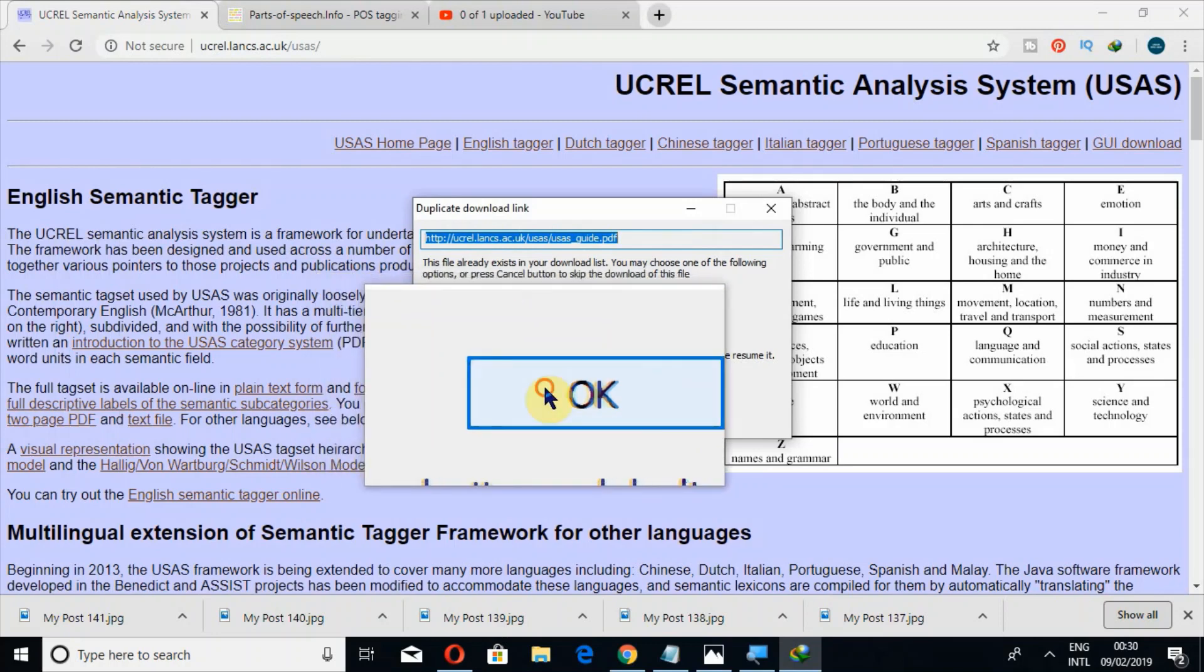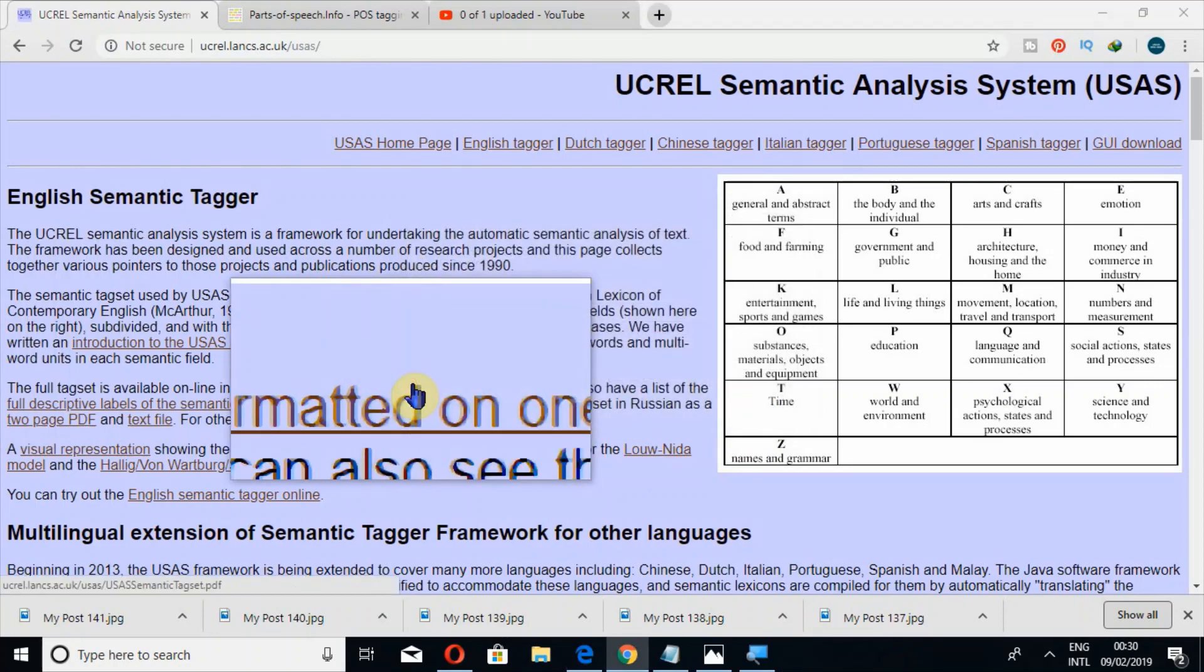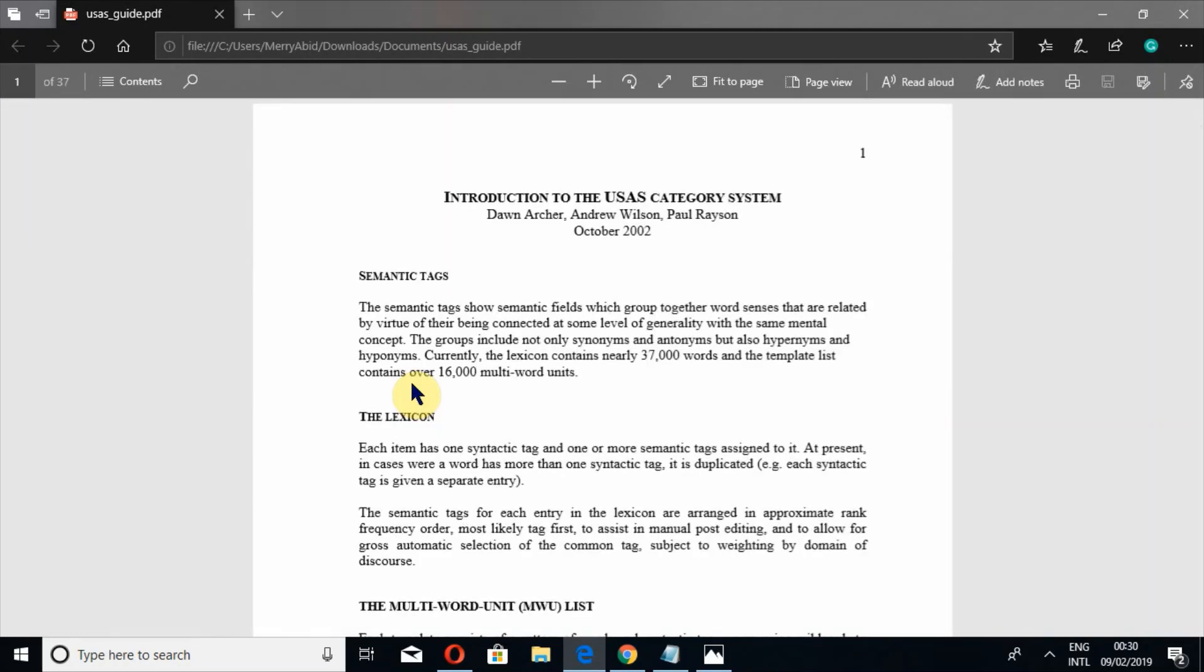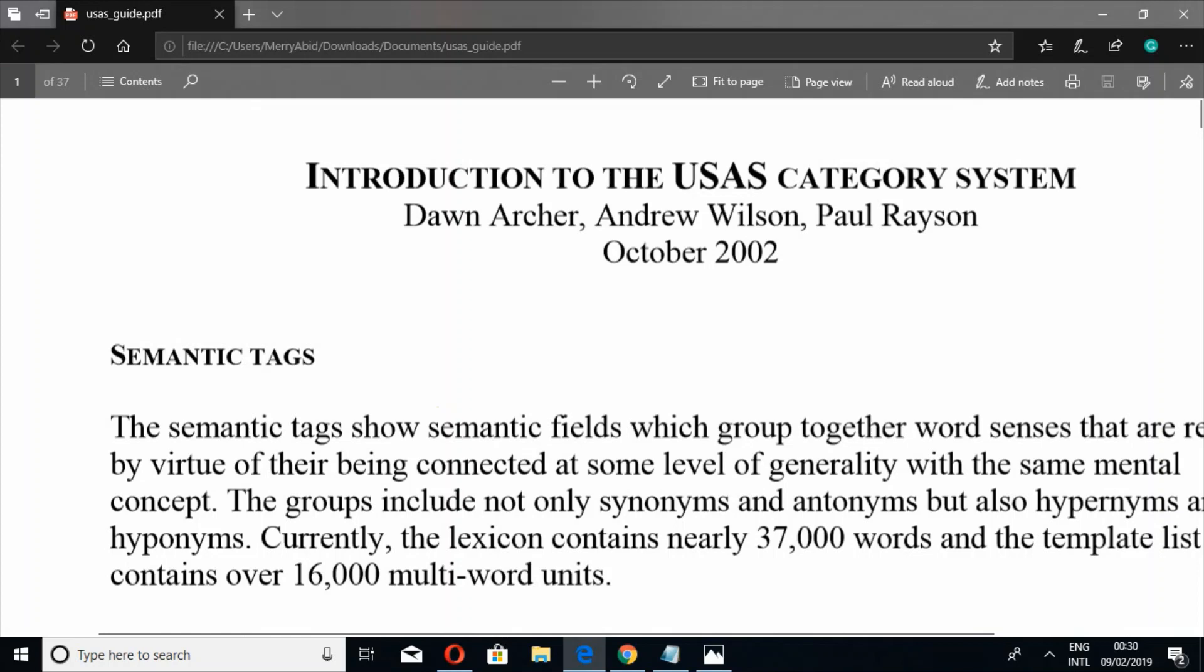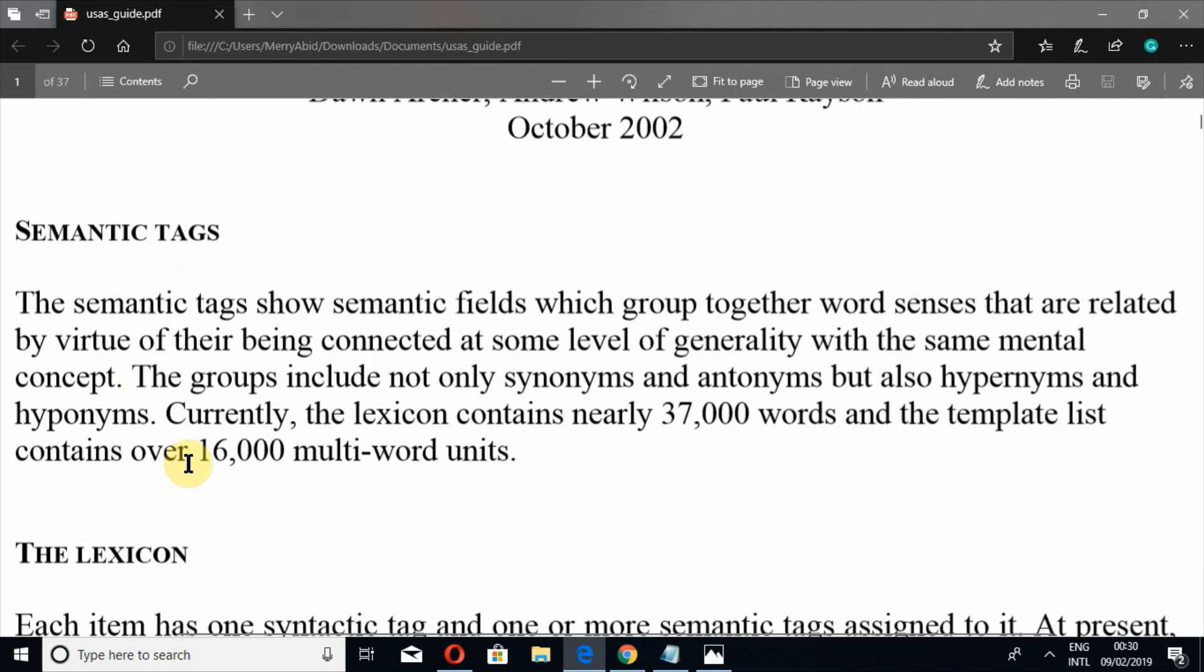In the second paragraph, you can see this link: Introduction to USAS Category System. Click on this and there will be a file you have to download. Now I'm going to open it.